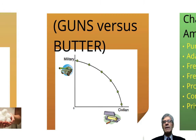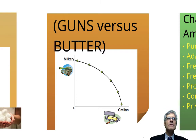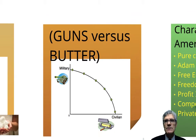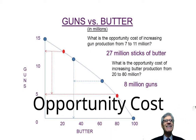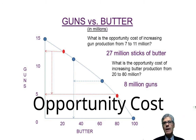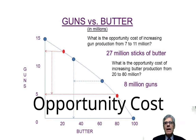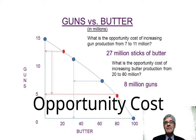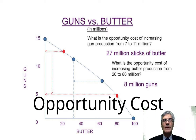There's an opportunity cost involved here. If you choose to put everything into the military, your people starve. Put everything into butter and you have no military — people will take you over. So as a society you've got to make a choice somewhere in between. The opportunity cost is the thing you didn't choose. For instance, what's the opportunity cost of increasing gun production from seven to eleven million? That middle blue dot is at about seven million guns; the next blue dot is eleven million. The opportunity cost is what you didn't produce in butter — 27 million fewer sticks of butter.